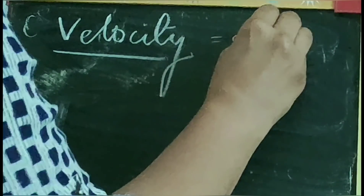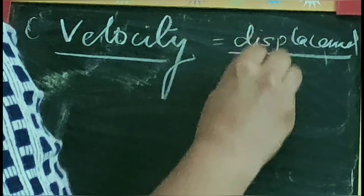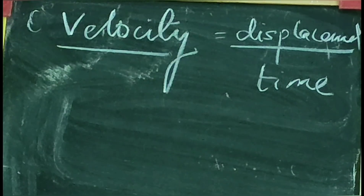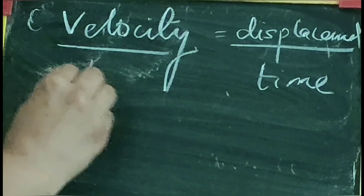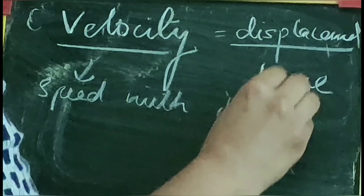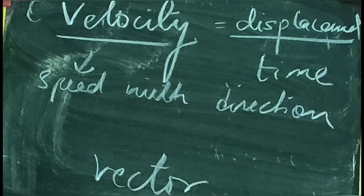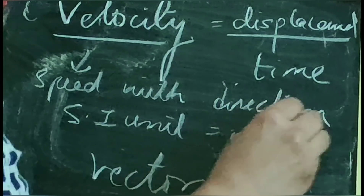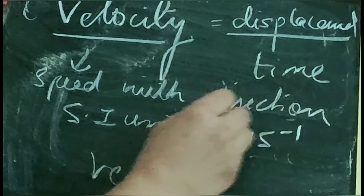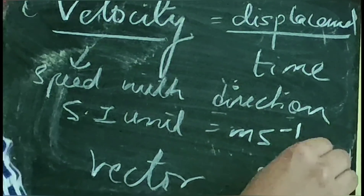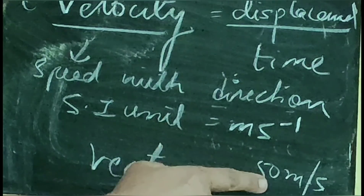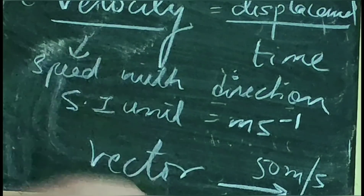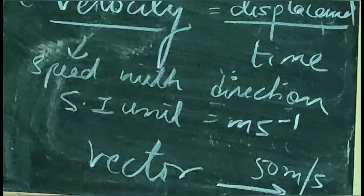Similarly, we have another physical quantity which is velocity. Velocity is defined as displacement covered by the object in a given interval of time. Speed was distance upon time; velocity is displacement upon time. In simple language, velocity is also known as speed with direction, and that is why velocity is a vector quantity. The SI unit for velocity is also meters per second. If an object is traveling at 50 meters per second, that is its speed. But if it is traveling at 50 meters per second towards east, that is velocity — speed with direction.